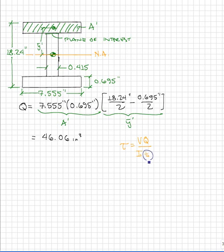Now at the web-flange interface, we have a small dilemma when we investigate the thickness, because we could consider the thickness as just the width of the web itself, or we could consider the width of the entire flange. In this case, we actually need to consider both, and this is why in the shear stress distribution of a composite section such as this, you'll see a jump in the shear stress at the web-flange interface.